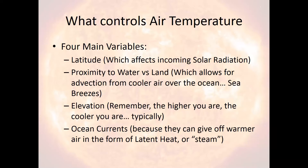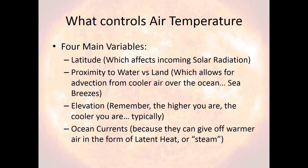What actually determines a location's seasonal temperatures? There are four main things that determine it: latitude, proximity to water, elevation, and ocean currents. So let's talk about each one.